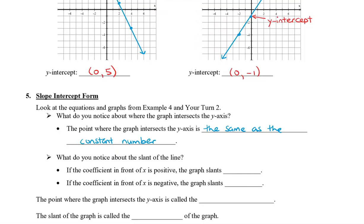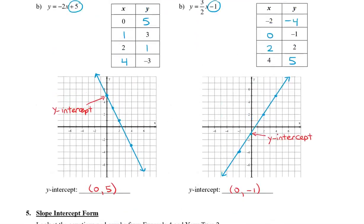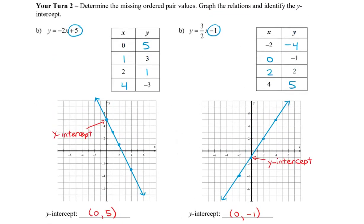Now what do you notice about the slant of the line? Well, we can see from here that the slant goes down for the first one, and we notice that it's because that number or the coefficient in front of the x is negative. When we take a look at the second graph, the second graph slants up, and you'll notice that the coefficient in front of the x is this time positive.